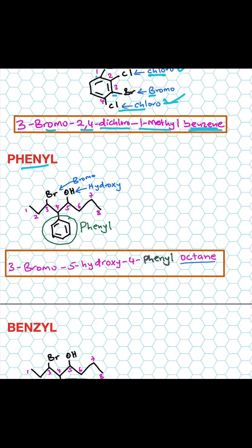When we use phenyl, it's when the benzene ring is a substituent. In this case, the name becomes three-bromo at position three, five-hydroxy, and four-phenyl — the phenyl is at carbon number four. The parent name is octane, because it has eight carbons.